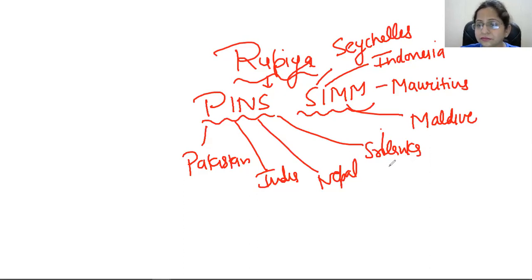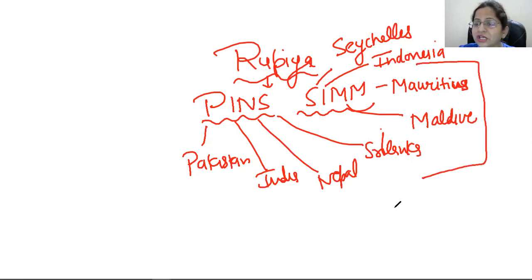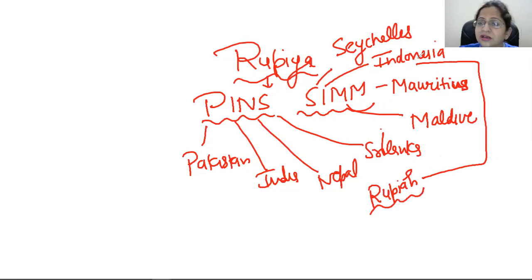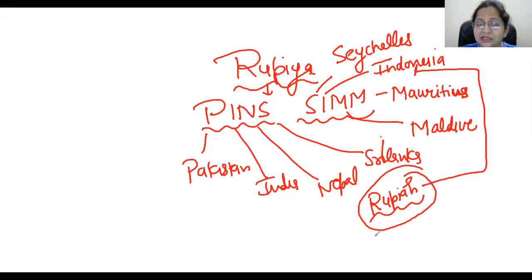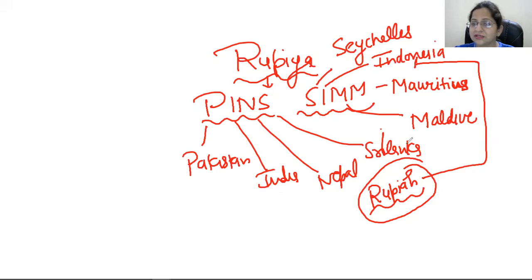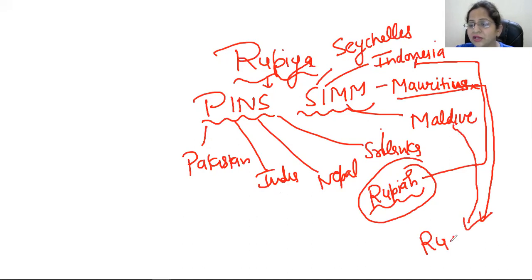Malaysia is Ringgit — that is correct. Indonesia's currency spelling is especially important to note: it is Rupiah, spelled R-U-P-I-A-H. This is a special thing. In Indonesia your spelling remains R-U-P-I-A-H. Sometimes you can be confused in the exam. And Maldives has a special spelling: R-U-P-F-I-A-H. This is very important knowledge.